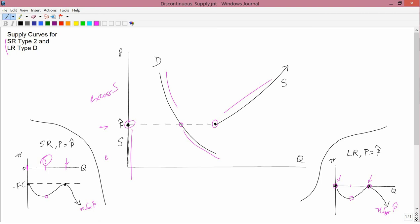Below p-hat you have excess demand, and at p-hat you have either excess supply if the firm decides to produce here, or you have excess demand if the firm decides to produce here. There is no equilibrium price. So what happens? It's not that short run type 2 and long run type D can't exist, but we've drawn the supply curve assuming competition.